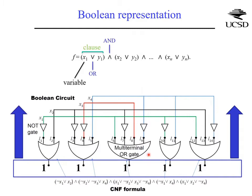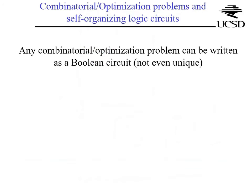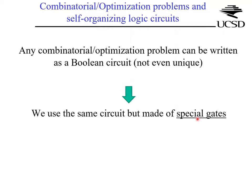What we do is take traditional combinatorial optimization problems, write them as Boolean circuits — which are not even unique; for a given problem you can find different representations, and some may be more conducive to numerics than others — and replace those gates with special gates built using time locality.